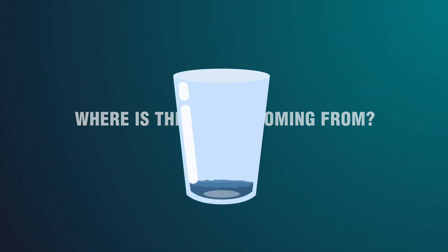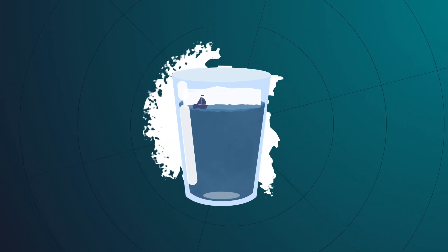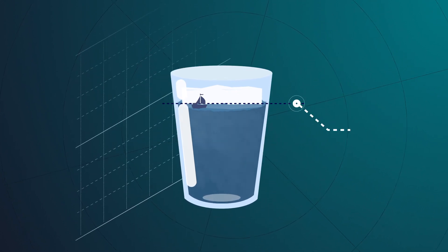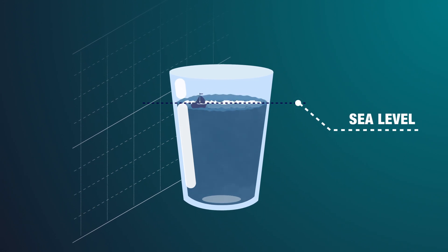So where is this water coming from? Well, not from the North Pole since it's just sea ice, and sea ice melted or not, just like an ice cube in a glass, won't change sea level.